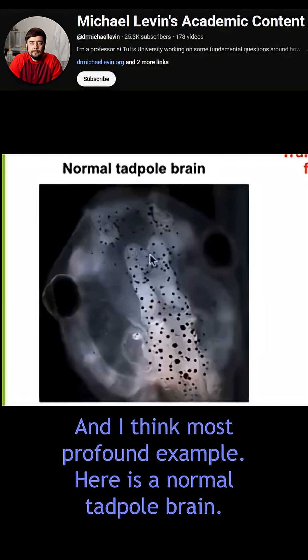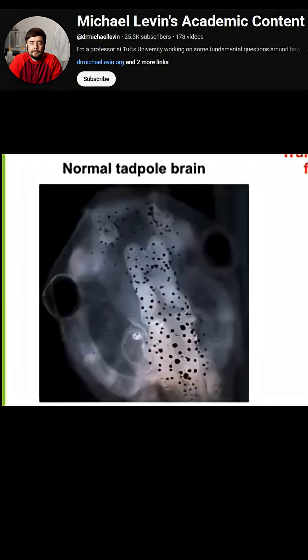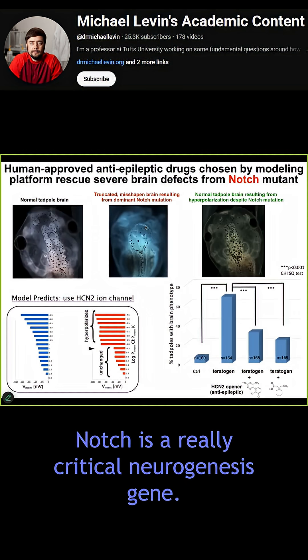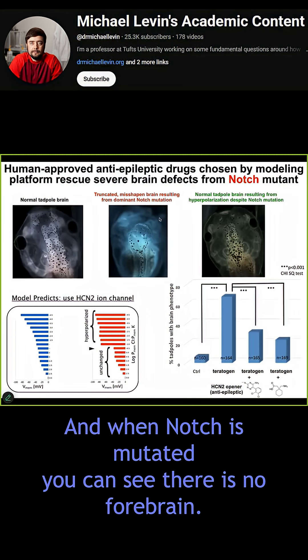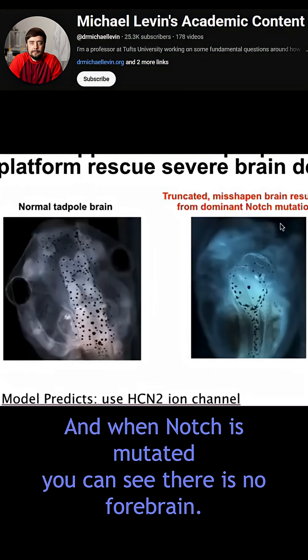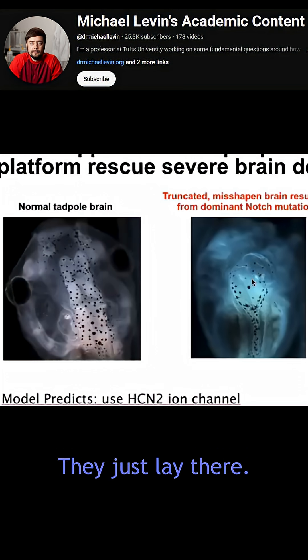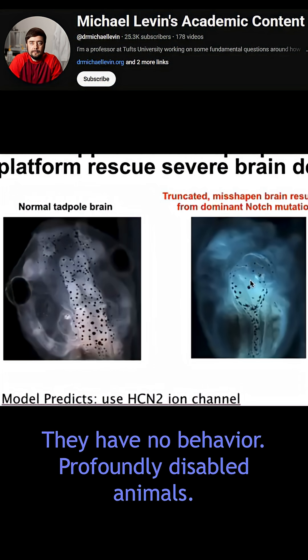Here is a normal tadpole brain. This is a brain of a tadpole bearing a dominant notch mutation. Notch is a really critical neurogenesis gene. And when notch is mutated, you can see there is no forebrain. The hindbrain and midbrain are a bubble of water. They just lay there. They have no behavior — profoundly disabled animals.